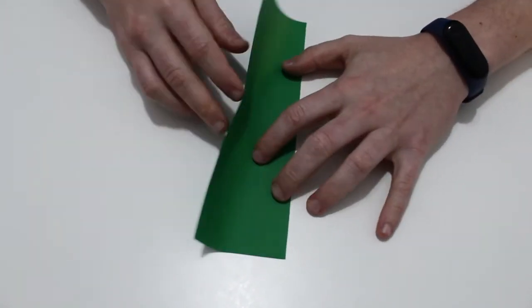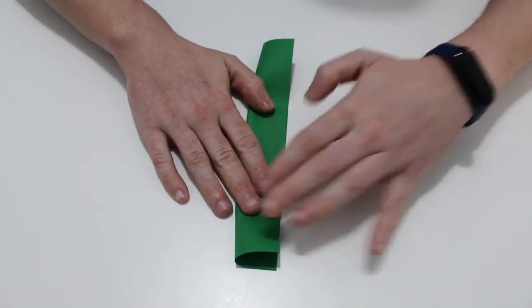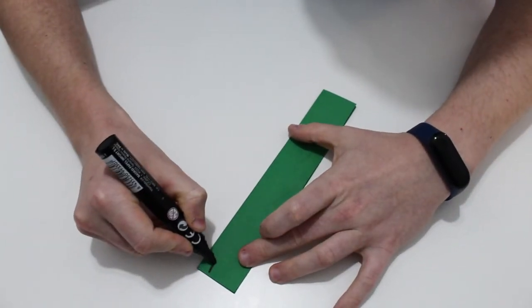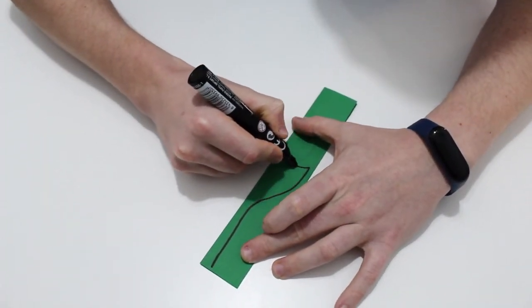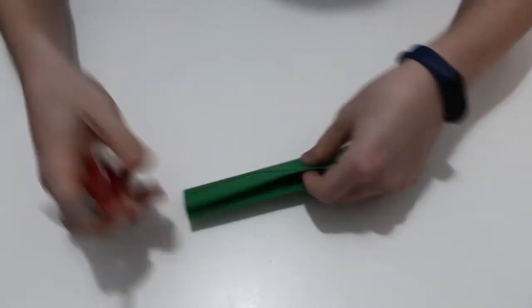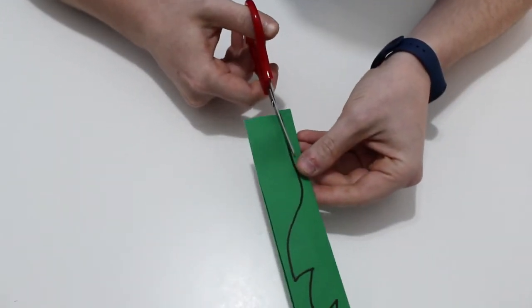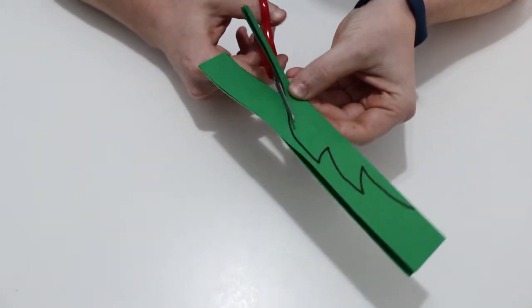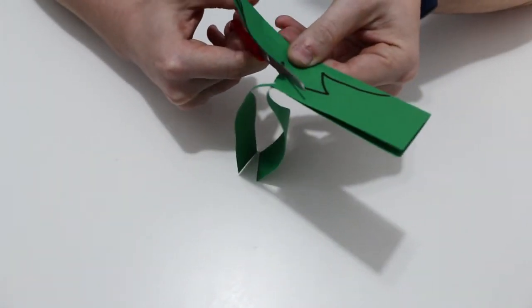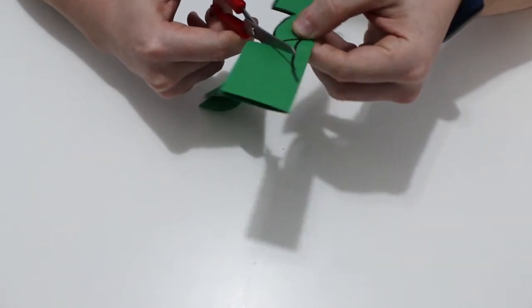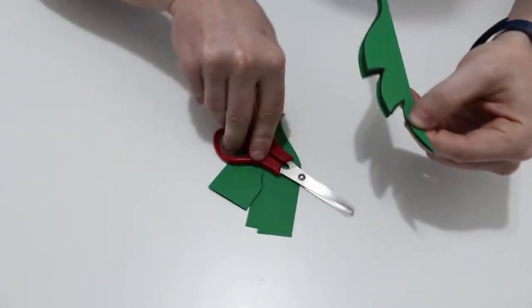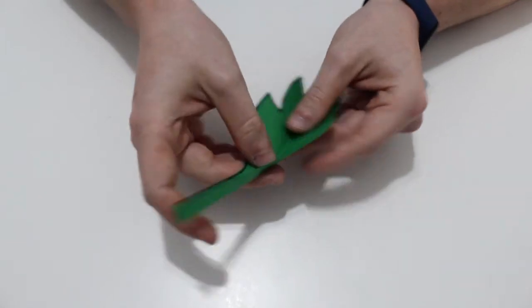El mismo procedimiento: doblamos por la mitad, vamos a dibujarla, vamos a recortarla. La abrimos y vamos a ver como ha quedado esta hoja.